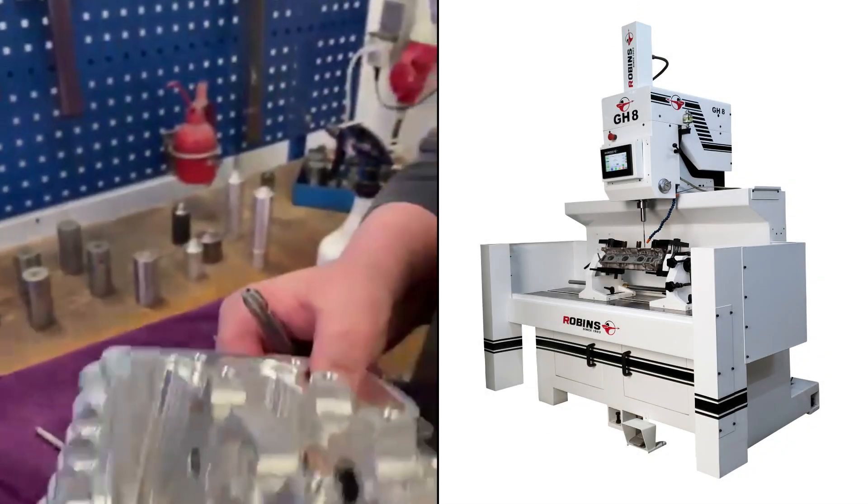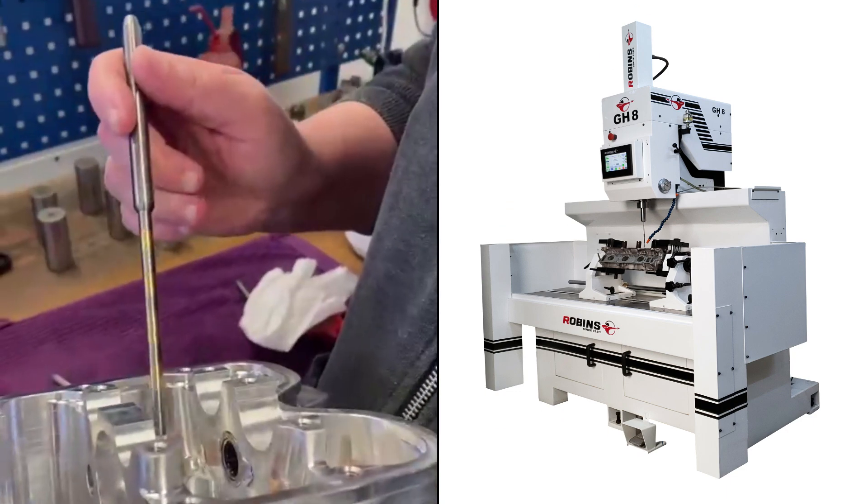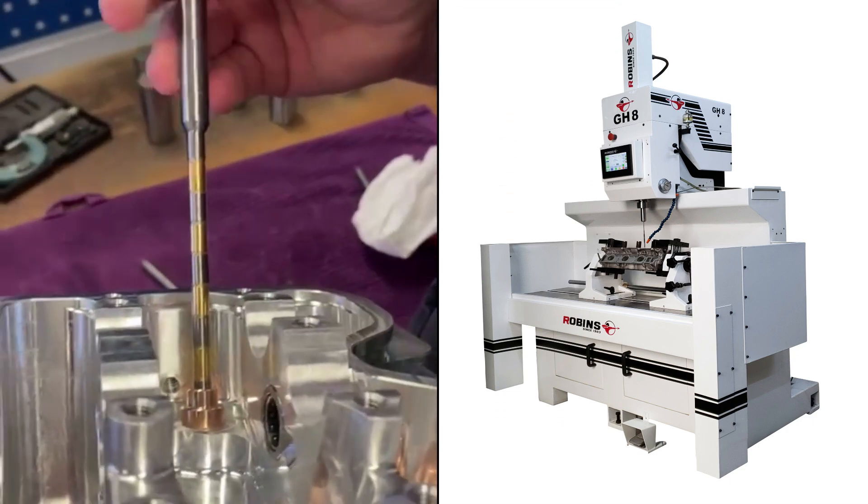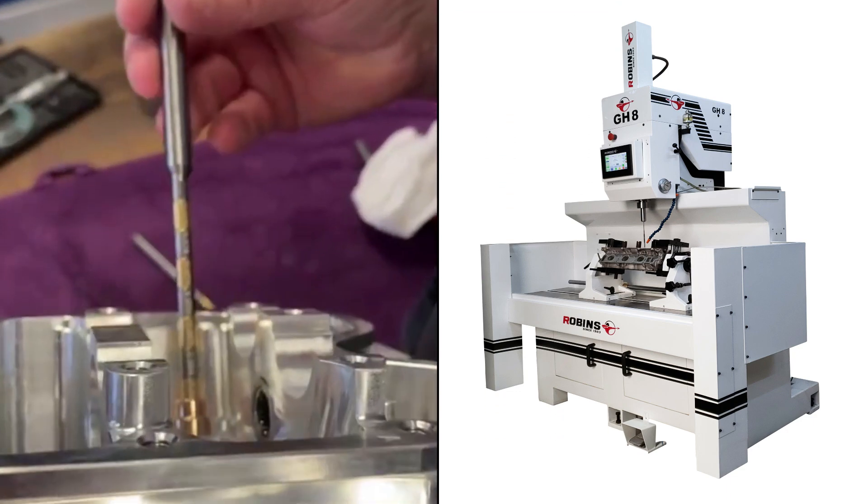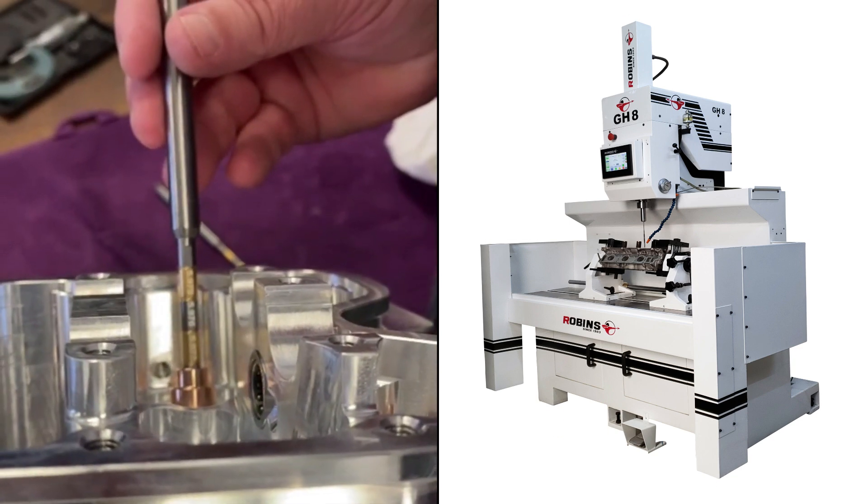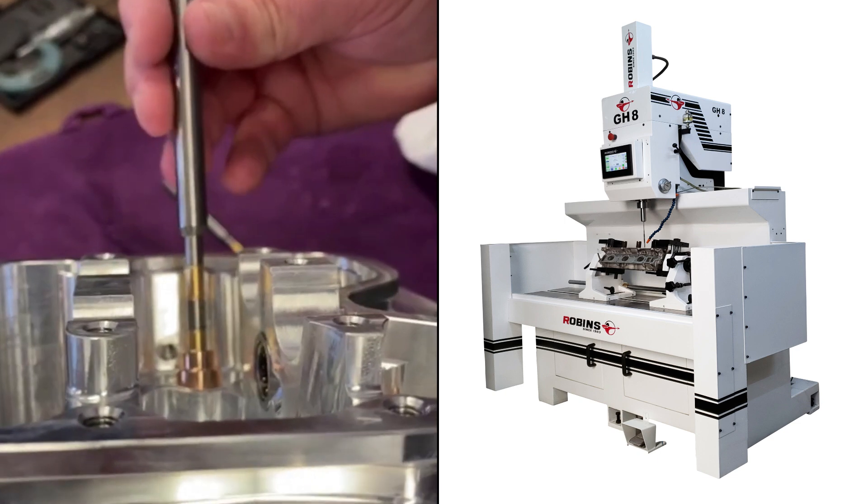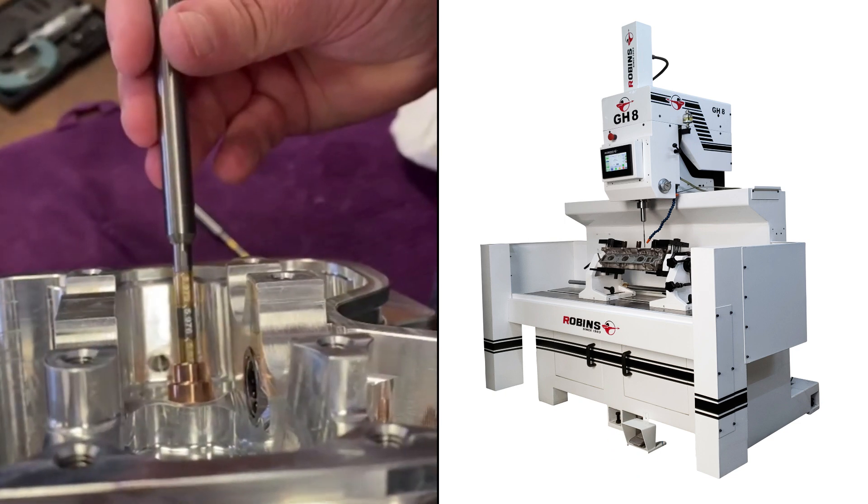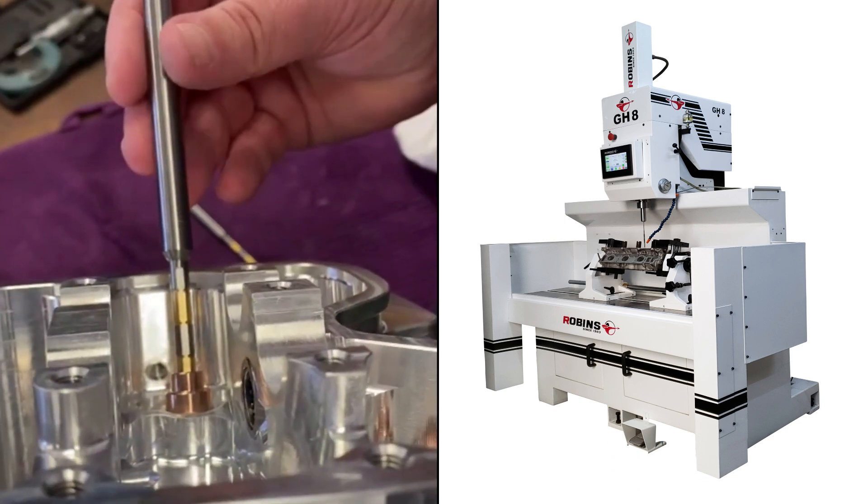I bought this nice honing machine from Robinson. Measuring the valve guide here, and we will have like 5.974 here in this guide.